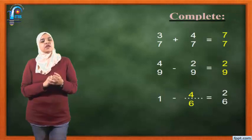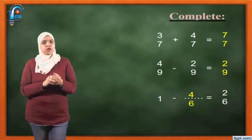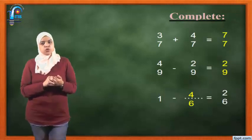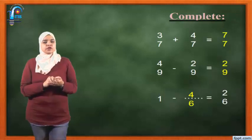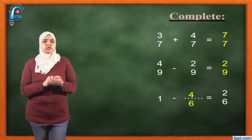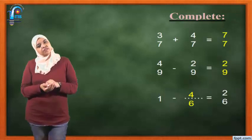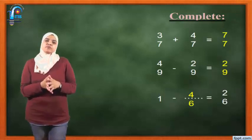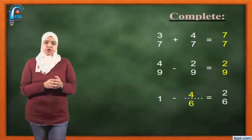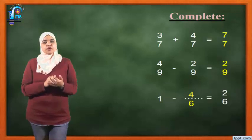As we said before, if the fraction up and down have the same number, they equal 1. Next: 4 over 9 minus 2 over 9 equals what? We put the same denominator, which is 9. So 4 minus 2 equals 2. The answer will be 2 over 9.